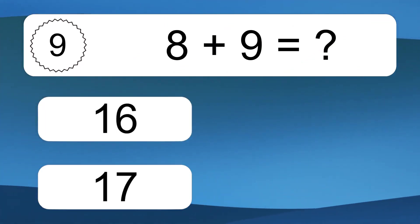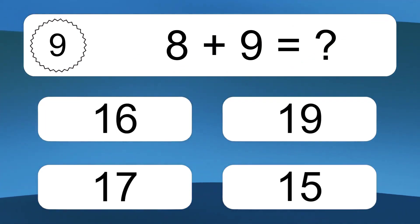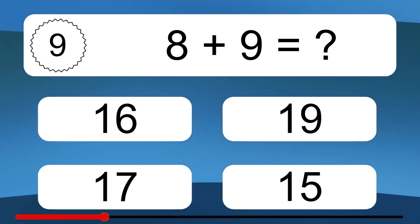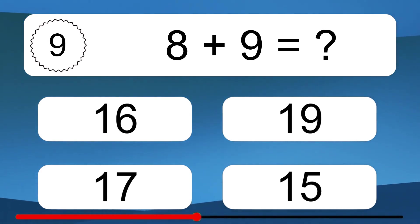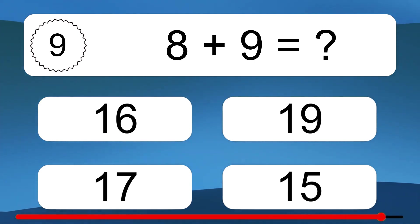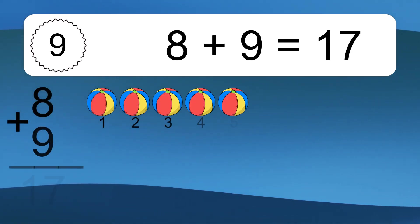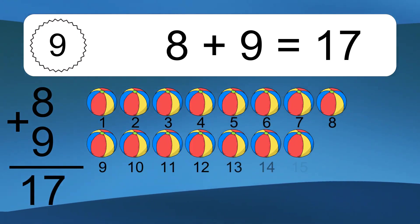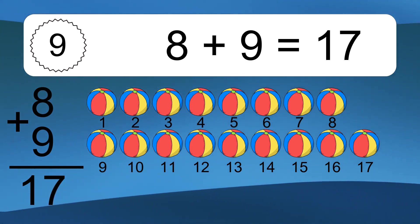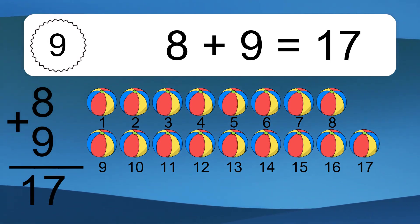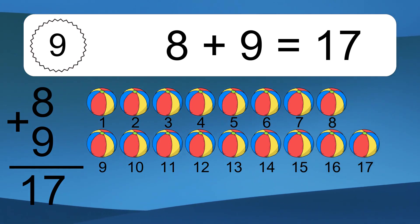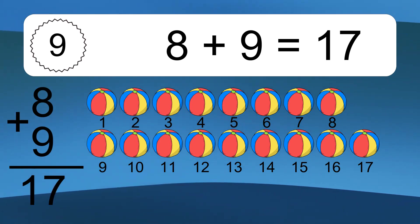8 plus 9 equals what? 8 plus 9 equals 17. Let's count it. 1, 2, 3, 4, 5, 6, 7, 8, 9, 10, 11, 12, 13, 14, 15, 16, 17.